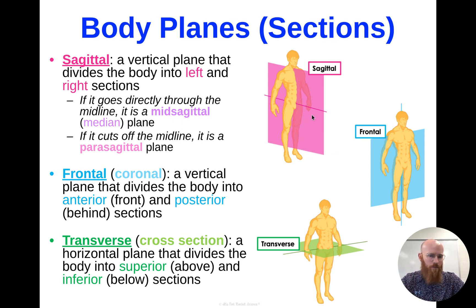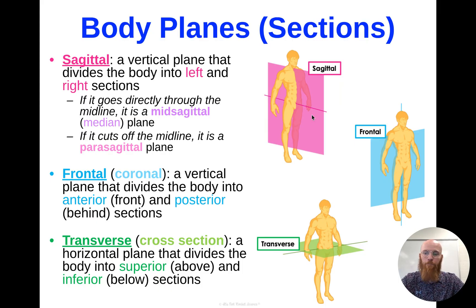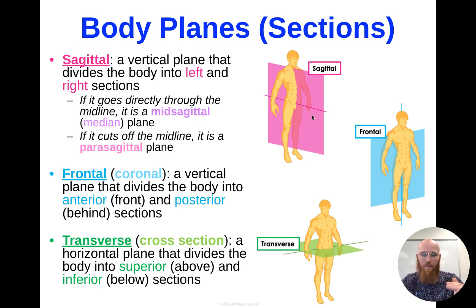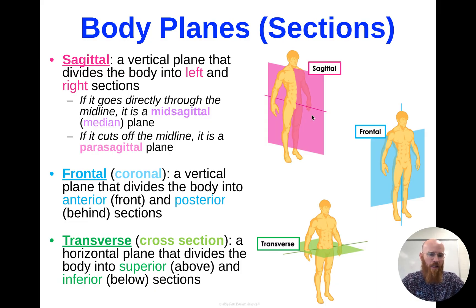Frontal or coronal — we'll usually just use frontal — is a vertical plane as well, but it's going to divide the body into front and back, so anterior and posterior sections. This is very common for x-rays and MRIs. Our last plane is going to be our transverse plane. This is the only horizontal one, and it's going to divide the body into superior and inferior — what is above and what is below. These planes are really helpful for assessing movement and for medical imaging.